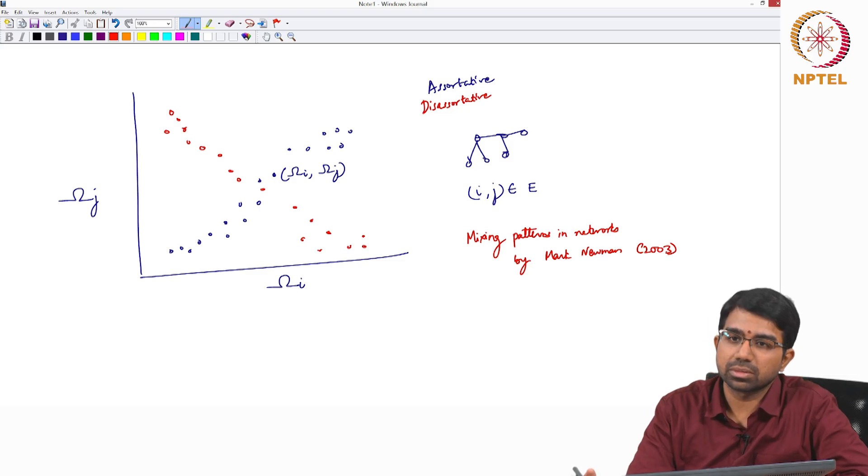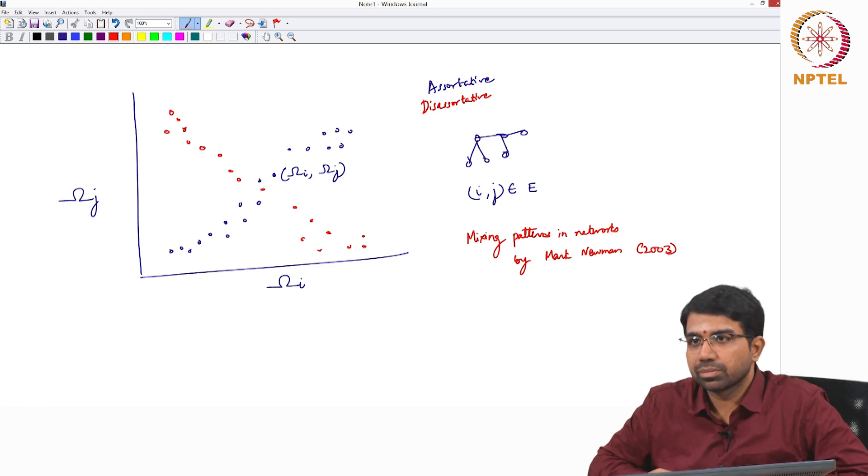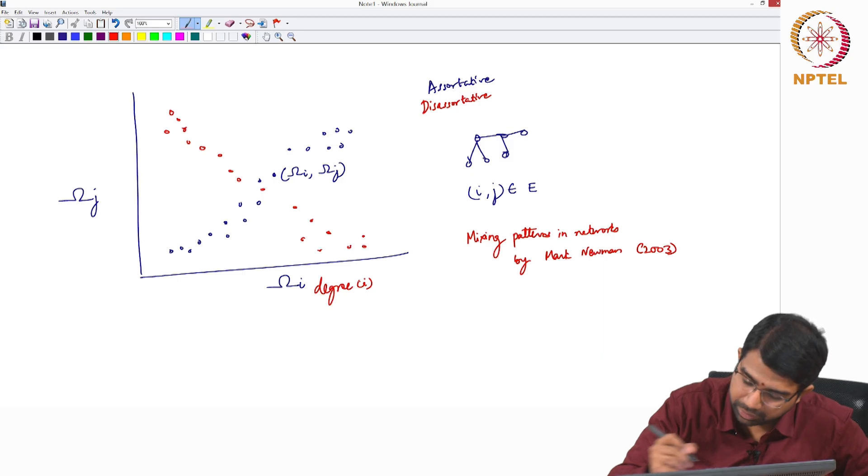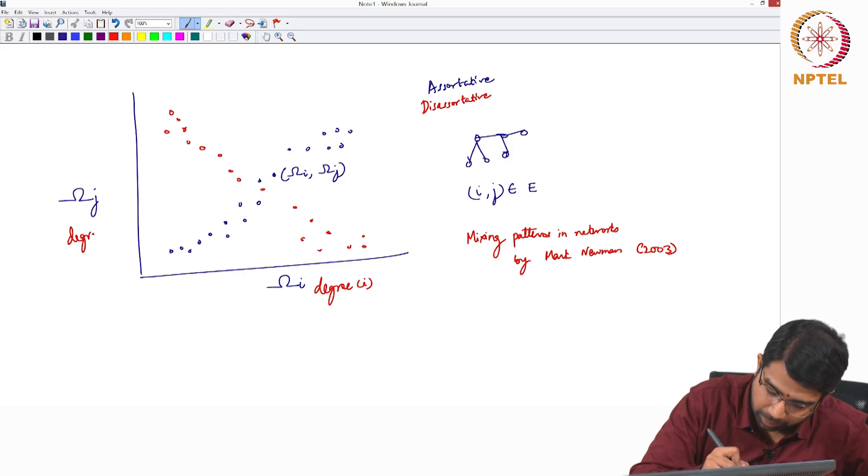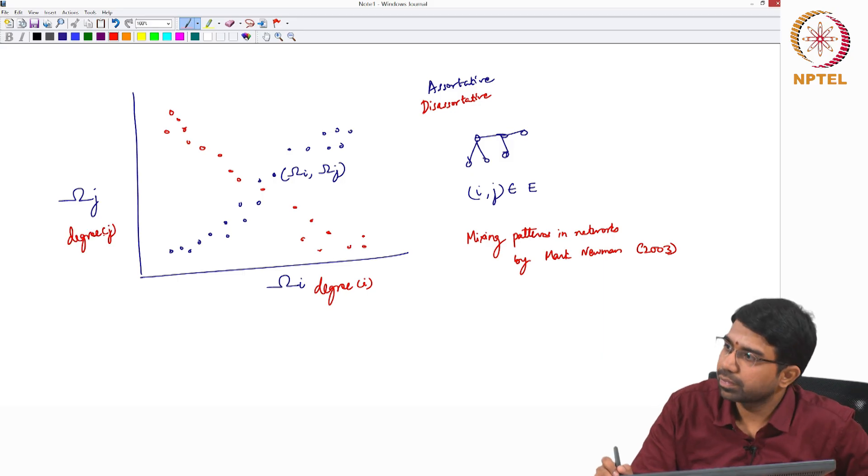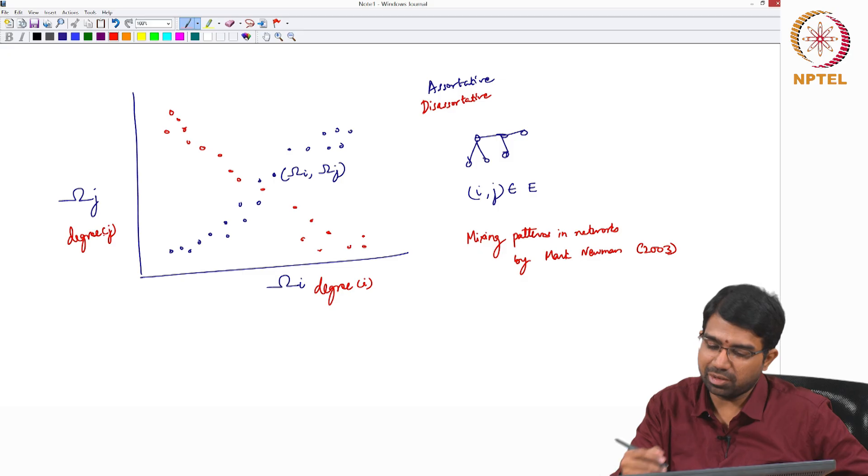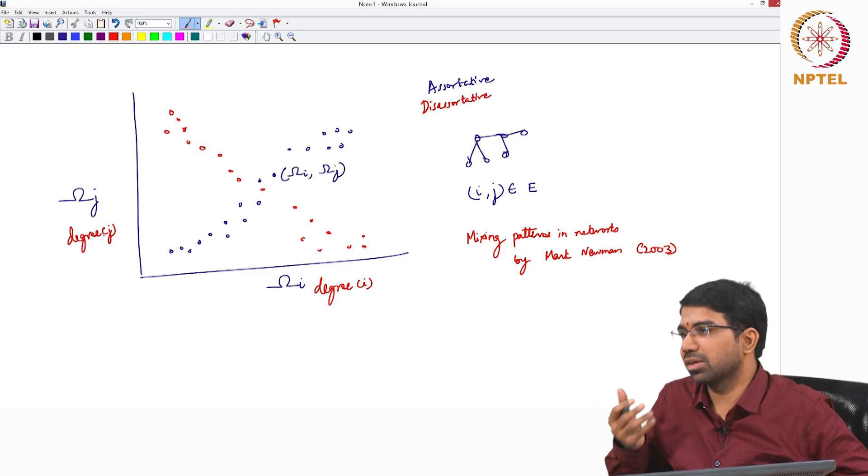Shreya, you had a question? Yes, yes. So, degree of i, let us say, for example, let us say this is degree of i. An example of omega is degree. One example for omega would be degree, but you can have betweenness, you can have any other interesting property.